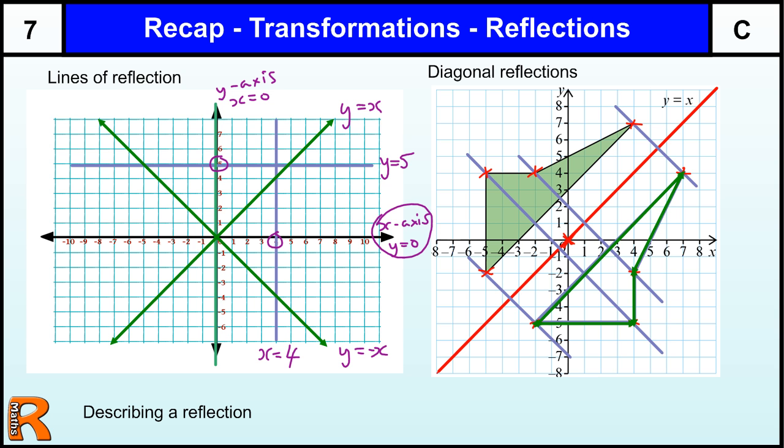One thing left to do, describing a reflection. Now, it may seem silly, but the main thing you need to say when describing a reflection is the word reflection. When you're describing a transformation, you obviously won't know which one it is. It could be reflection, rotation, and translation. Obviously, it's obvious if something's been enlarged.